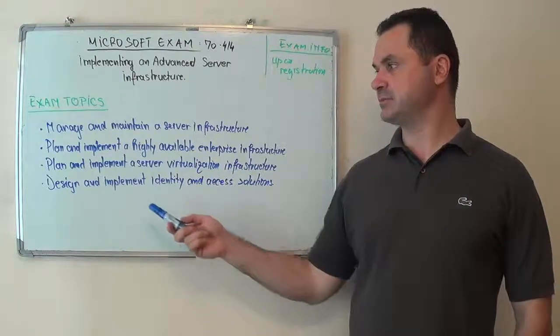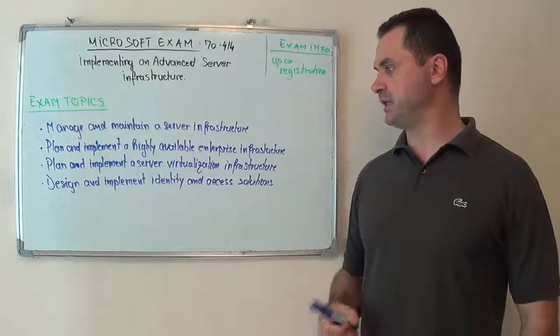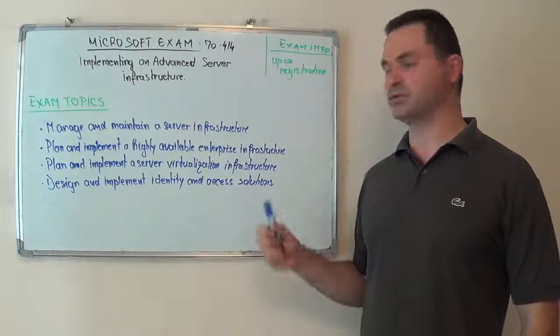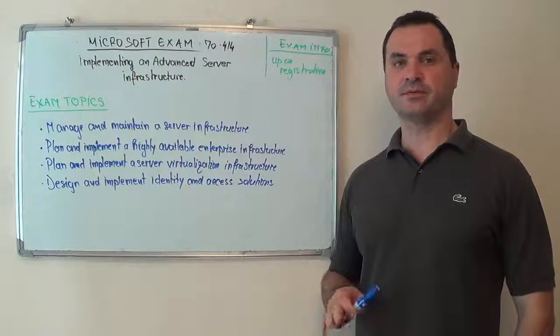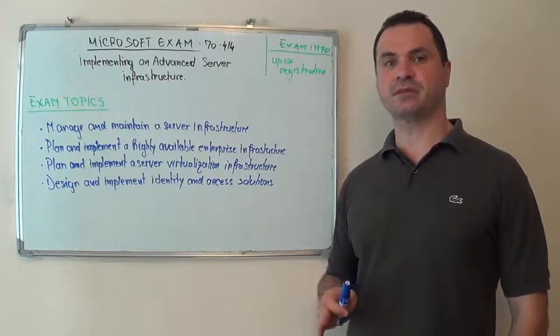And the fourth topic, design and implement identity and access solutions. They all cover about the same amount of questions, between 25 and 30% from the total.